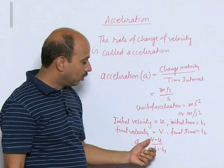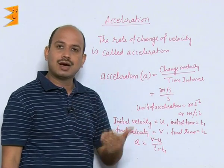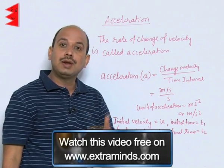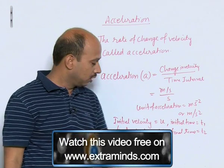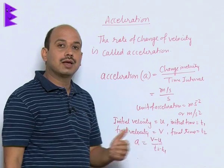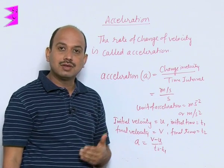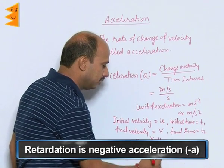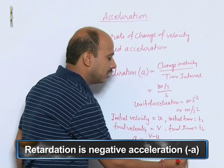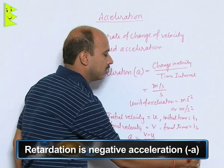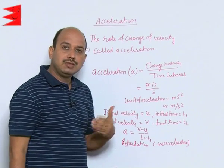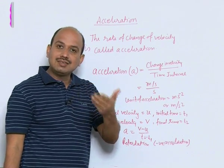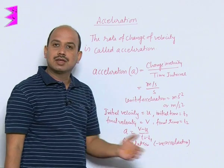But if final velocity is less than initial velocity — suppose initially a car was moving at 50 kilometers per hour, and after some time it is moving at 20 kilometers per hour — the speed has gone down. In this case the value of acceleration will be negative. This negative acceleration is known as retardation. So whenever speed decreases with time, we say retardation, that is negative acceleration.